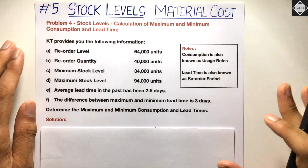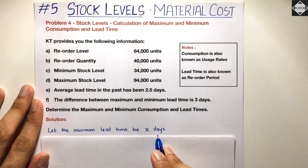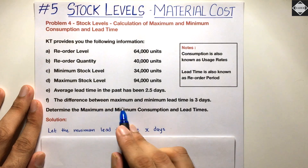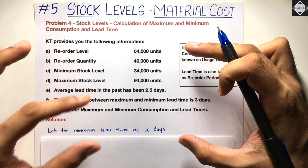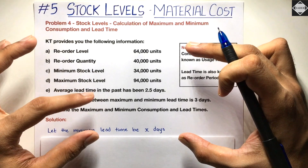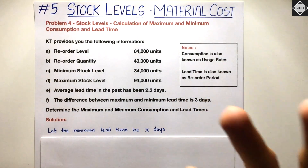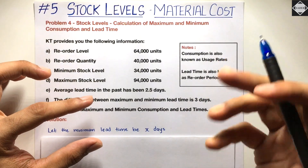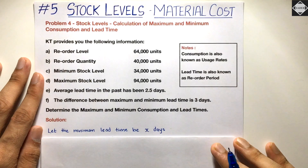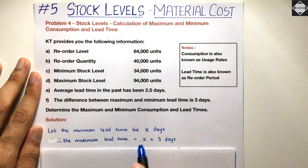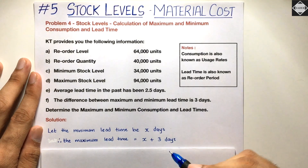First, assume minimum lead time to be x days. The difference between maximum and minimum lead time is 3 days. Since minimum is less than maximum, you assume minimum = x, and maximum = x + 3 days. The question tells us the difference is 3 days, so maximum lead time will have those extra 3 days.